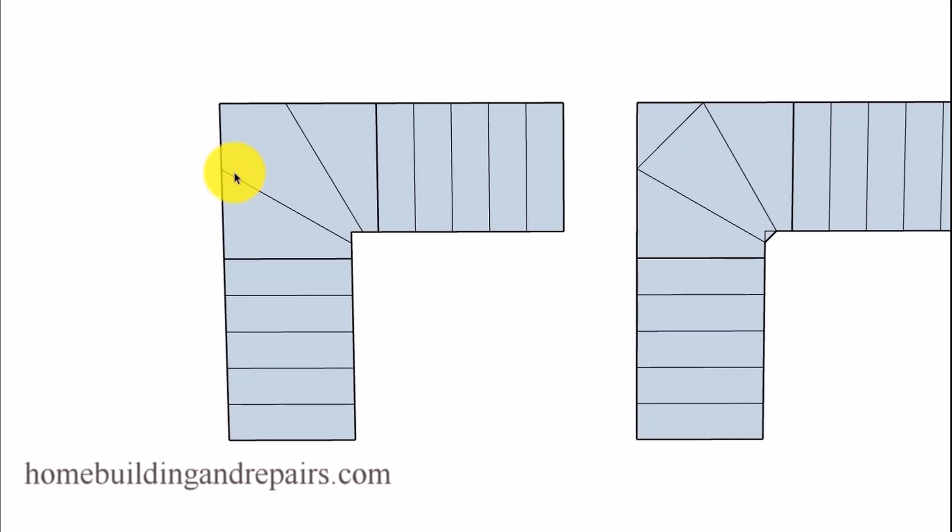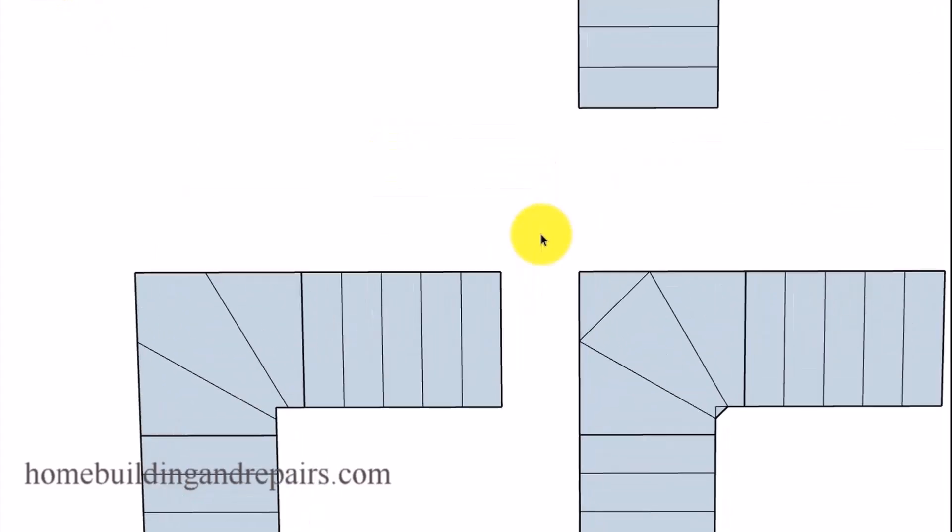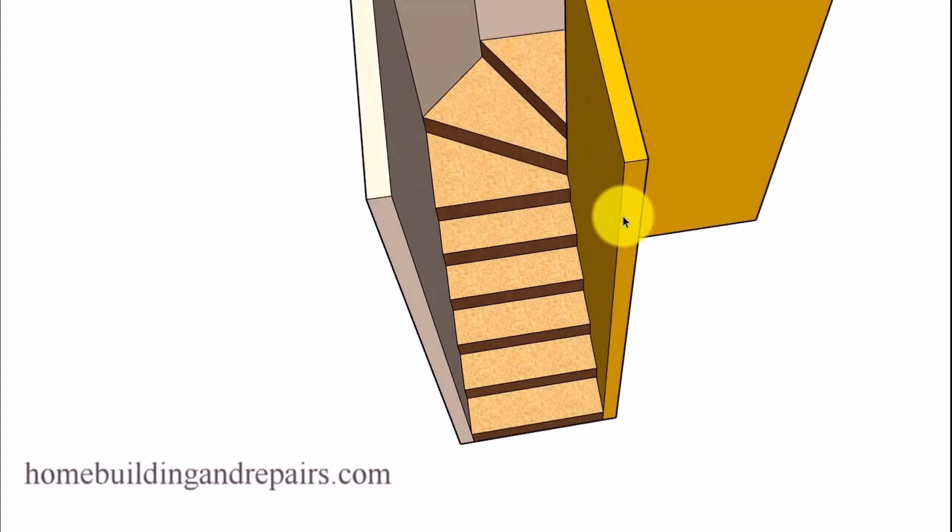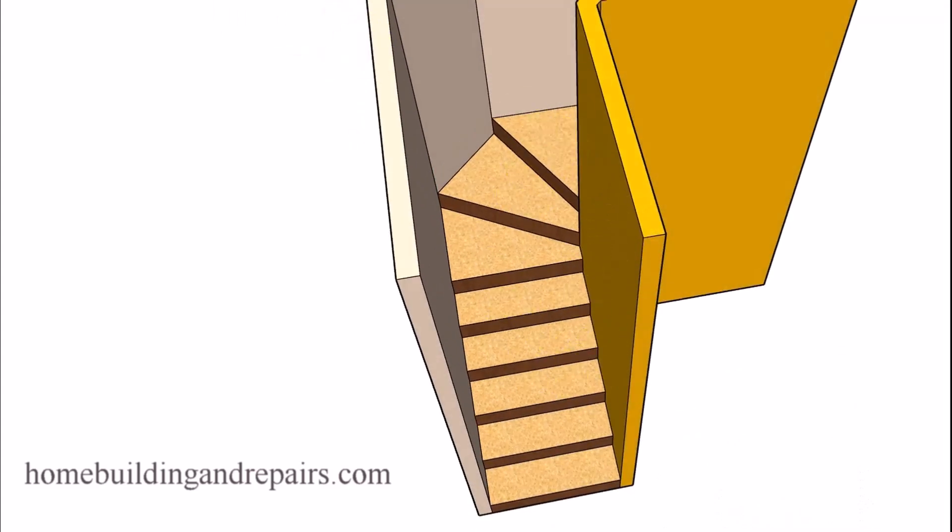Something else you might consider would be to simply connect the dots here and create a couple of angled sections in the wall. Something like this. Here's what it would look like after it was built.